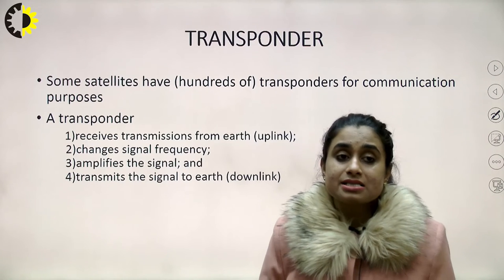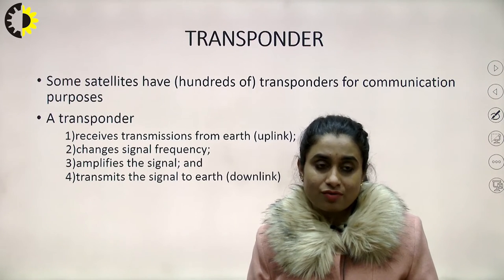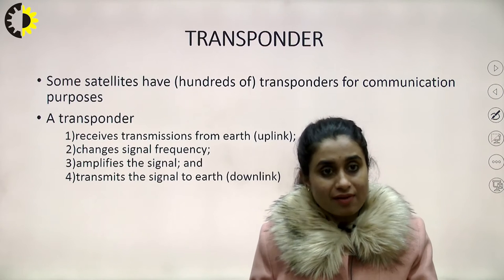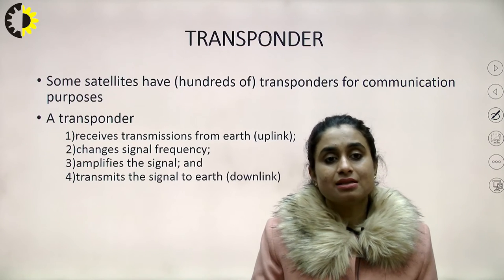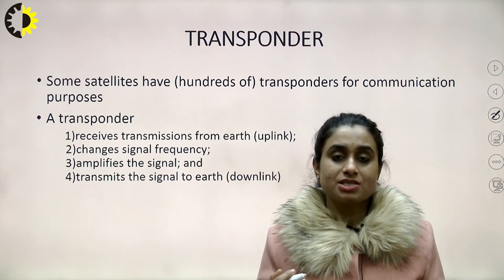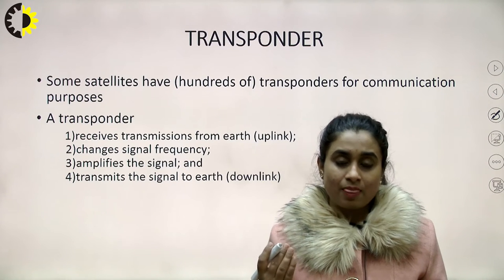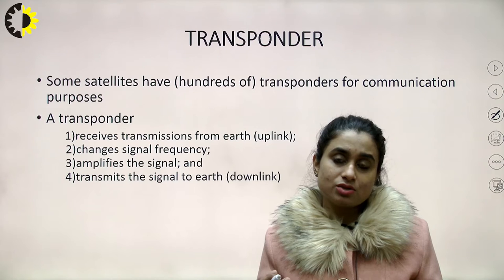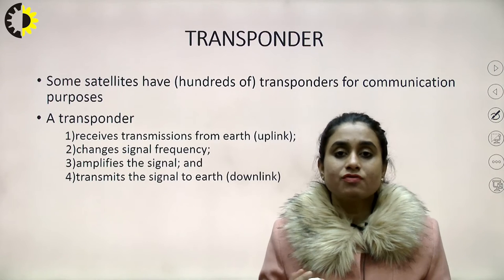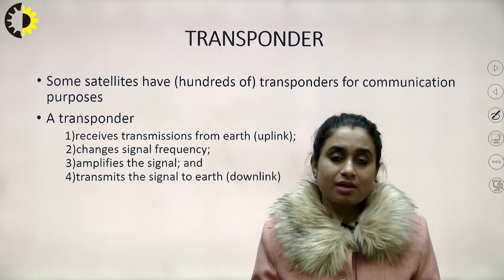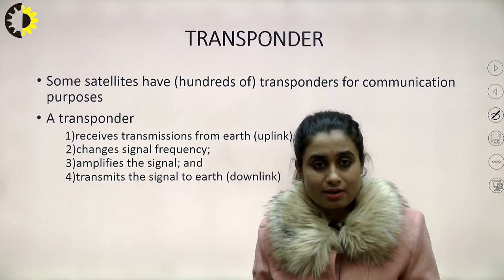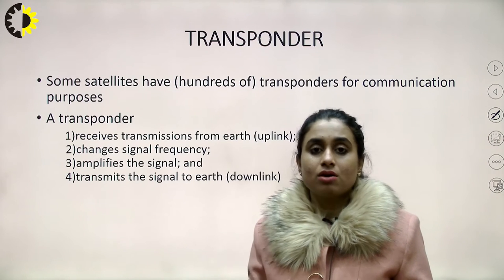Some satellites have hundreds of transponders. The role of a transponder is to receive transmissions from Earth, change the signal frequency, amplify the signal, and retransmit it back to the receiving earth station through the downlink. The uplink and downlink frequencies are separated from each other so they are distinguishable. Almost every time the downlink frequency is lower than the uplink frequency, because the satellite is a small unit suspended in space — too much amplification would be difficult — whereas at the earth station we are powerful and can make whatever alterations are necessary.